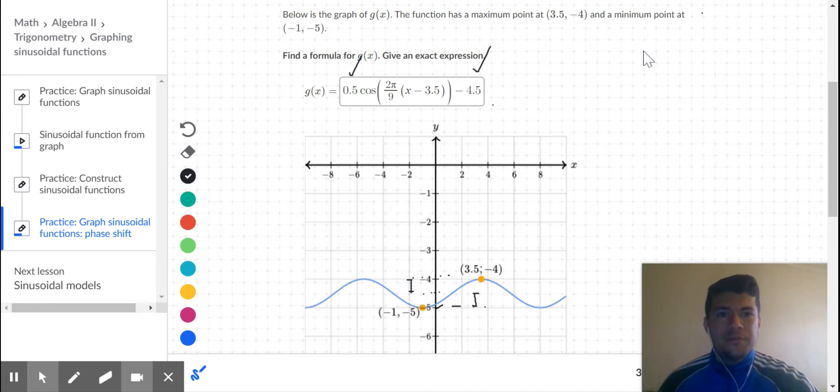The next part, now that we've got our midline and amplitude, is deciding: is this a cosine or sine function? You can actually get it right with either one. It just depends on how much you shift it, because they have the same shape.